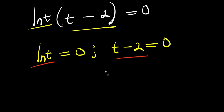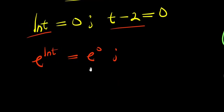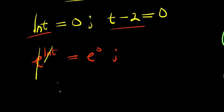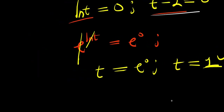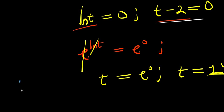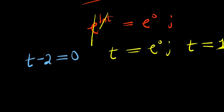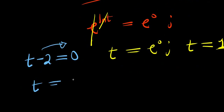Let's solve each individual equation. If natural log of t equals 0, apply e: e to the power of natural log of t equals e to the power of 0. The natural log cancels, giving t equals e to the power of 0, and t equals 1, because any base raised to the power of 0 is 1. For t minus 2 equals 0, solving for t gives t equals 2 — that is t₂. So I have two values: t₁ equals 1 and t₂ equals 2.